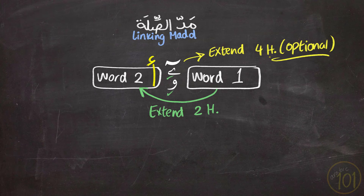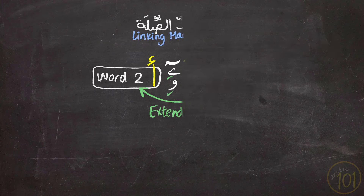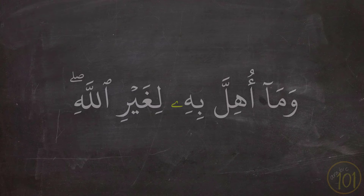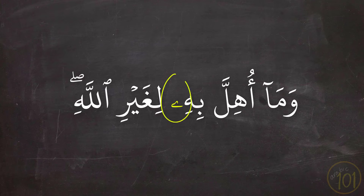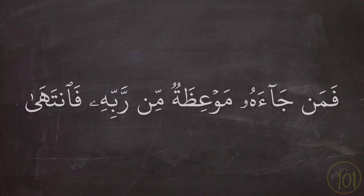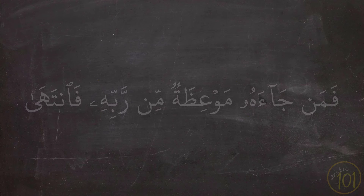Now it's time for the recitation of today's lesson. We'll be reading from Surah Al-Baqarah. You'll notice that the Linking Mad will be highlighted with a different color. Towards the end of the recitation, the Linking Mad will no longer be highlighted, so you'll have the chance to try and apply the rules you've learned today.